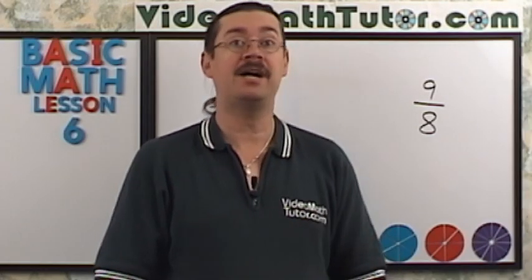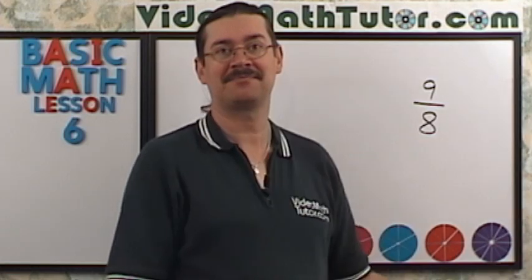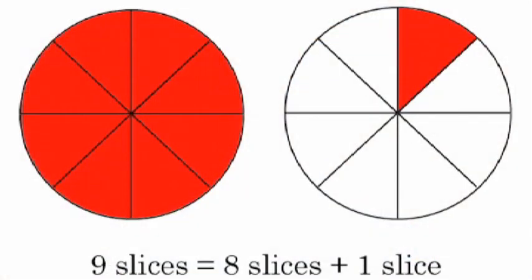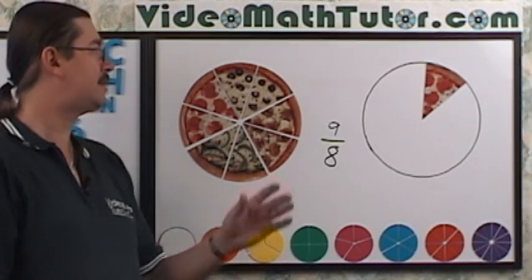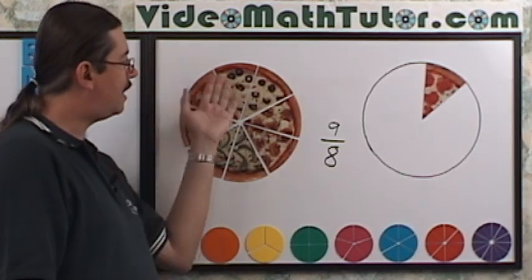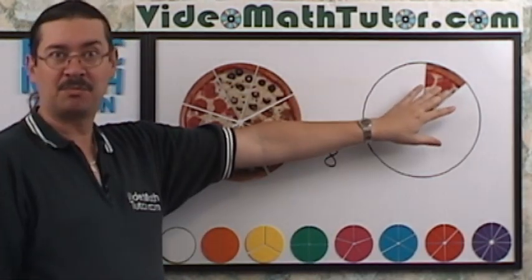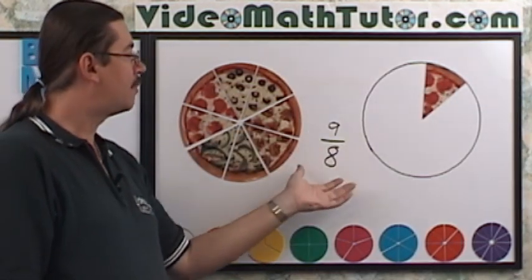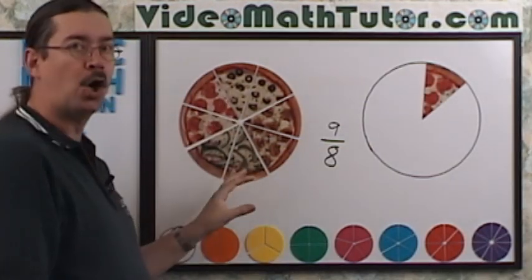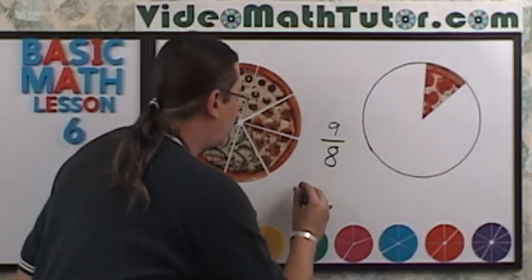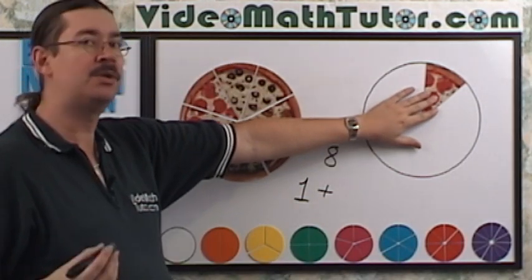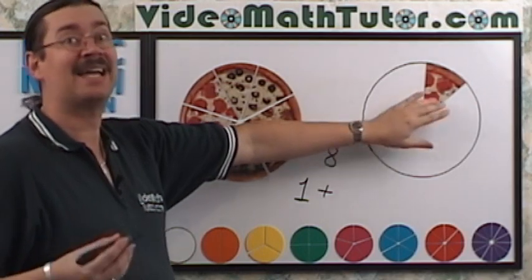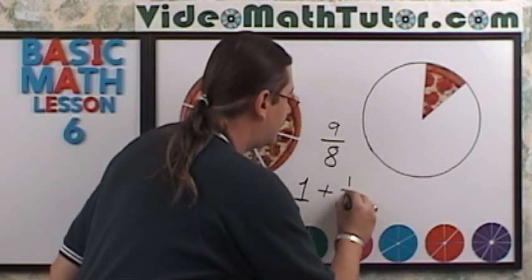Let's take a look at a pie graph of 9 eighths. In a similar way, we can represent this as pizza. Our 9 eighths is 8 slices plus one more. But there's another way of seeing this. See, this is one entire whole pizza. So this is just one. Plus we have one more slice. How would you represent that? One and an eighth.